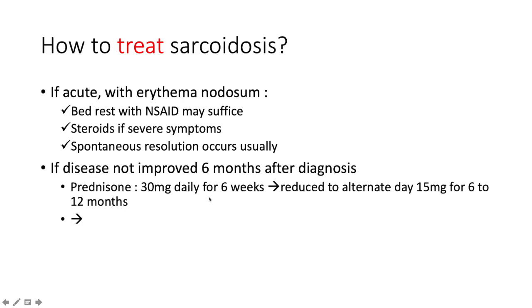Start prednisone at 30 mg daily for six weeks. You must taper it — you don't want to suppress the hypothalamic-pituitary-adrenal axis, and you can't just stop it abruptly.